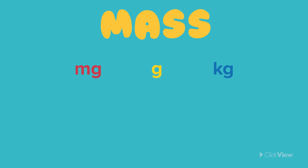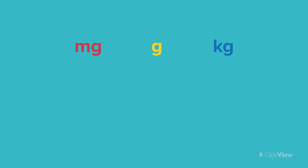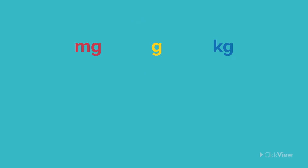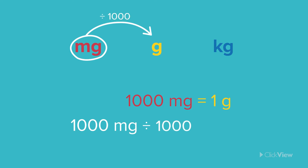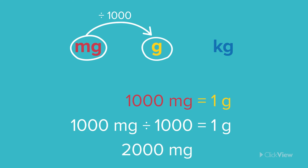Let's take a look at how we convert between these units of mass. Converting between units of mass is quite straightforward because moving between each unit works on scales of one thousand. If we know there are one thousand milligrams in one gram, all we do is divide milligrams by one thousand to find the value in grams. So two thousand milligrams is equal to two grams.